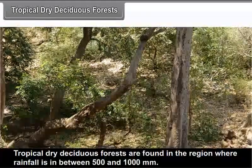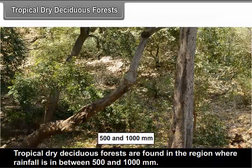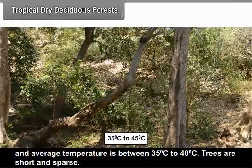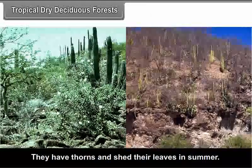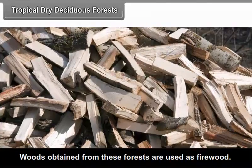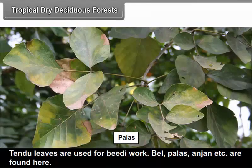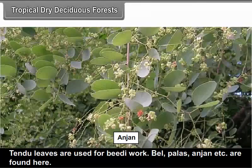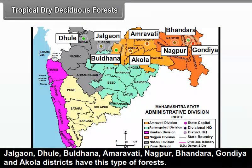Tropical Dry Deciduous Forests: These forests are found in regions where the rainfall is between 500 and 1000 mm and the average temperature is between 35°C to 40°C. Trees are short and sparse, have thorns and shed their leaves in summer. Woods obtained from these forests are used as firewood. Tendu leaves are used for beedi work. Bell, Palas, Anjan, etc. are found here. Yavatmal, Dhule, Buldhana, Amravati, Nagpur, Bhandara, Gondiya and Akola districts have this type of forests.